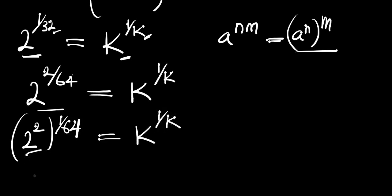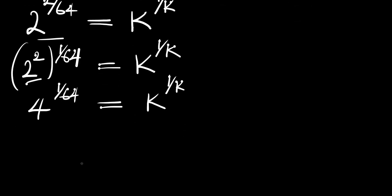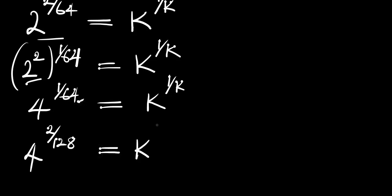Now 2 raised to the power of 2 is 4, so we have 4 raised to the power of 1 over 64, and this equals k raised to the power of 1 over k. We proceed again — instead of 1 over 64, we can write this as 2 over 128. So we have 4 raised to the power of 2 over 128. Remember, if you cancel 2 and cancel 128 you get 1 over 64 again, and this equals k raised to the power of 1 over k.